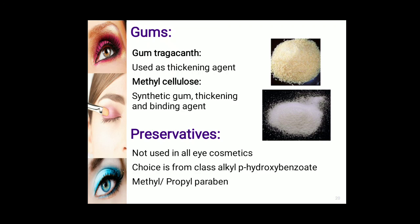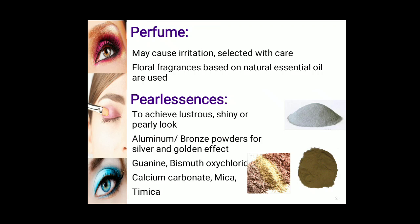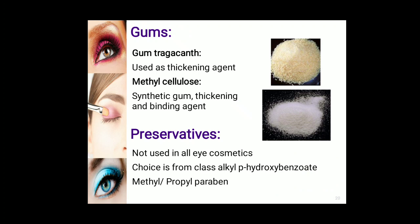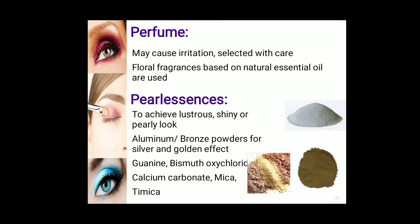Various gumming agents such as tragacanth can be used as a thickening agent, and cellulose derivatives like methyl cellulose can also be used. Preservatives are not used in all types of eye cosmetic products. The choice is from the alkyl p-hydroxybenzoate class; methyl paraben and propyl paraben can be used as preservatives. Preservatives are required because different types of oils and gums are used, creating chances of microbial contamination.